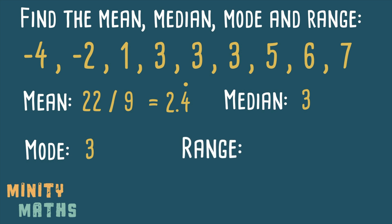Finally, to find the range we are going to subtract the smallest number, which is minus 4, from the largest number 7. If you need a refresher on working with negative numbers, see our video linked above and in the description below.